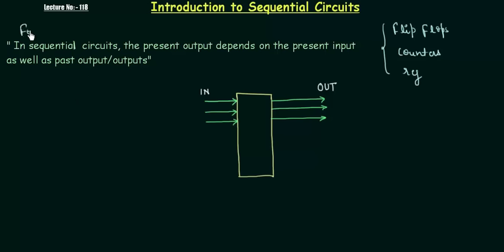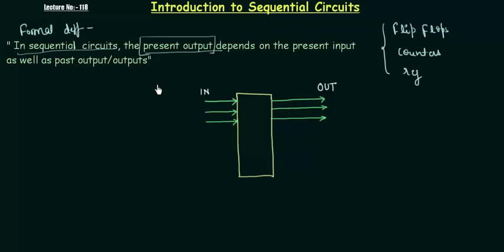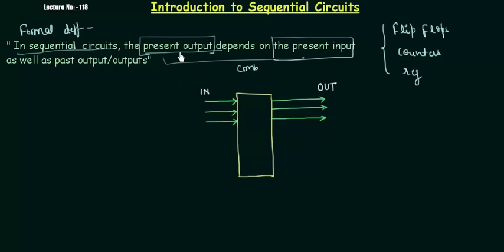This is a formal definition for your sequential circuit — you can use this definition in your exams as well. In sequential circuits, the present output depends upon the present input. When these two things are combined together, that makes your combinational circuit. In a combinational circuit, the present output depends only on the present input.